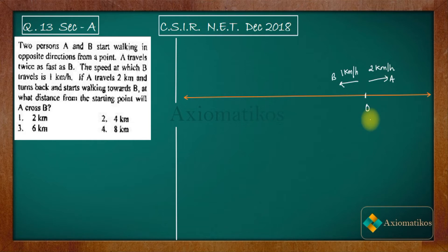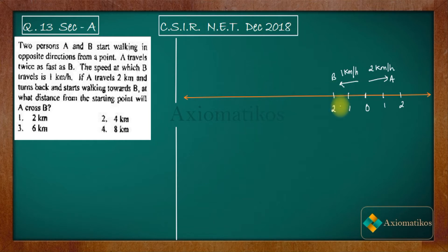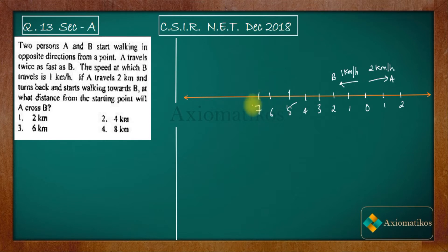Now let us mark blocks of one kilometer on the diagram. On one side we mark one kilometer, two kilometers; and on the other side one, two, three, four, five, six, seven, eight kilometers. We will do everything on this graph.